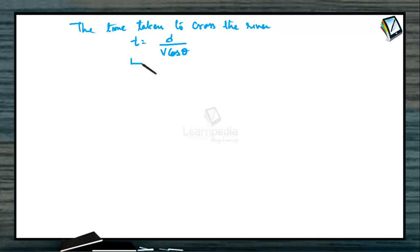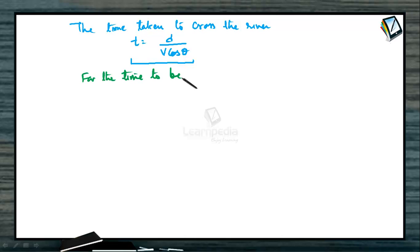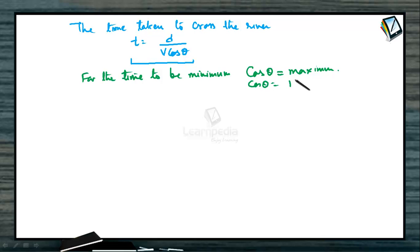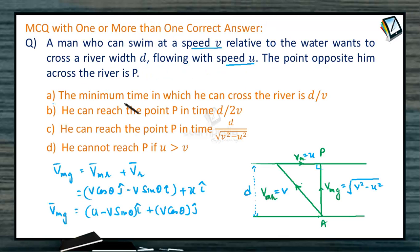The time taken to cross the river T equals D divided by V cosθ. For minimum time, V cosθ must be maximum, and the maximum value of cosθ is 1. Therefore, the minimum time is D/V. So the first option A is correct.